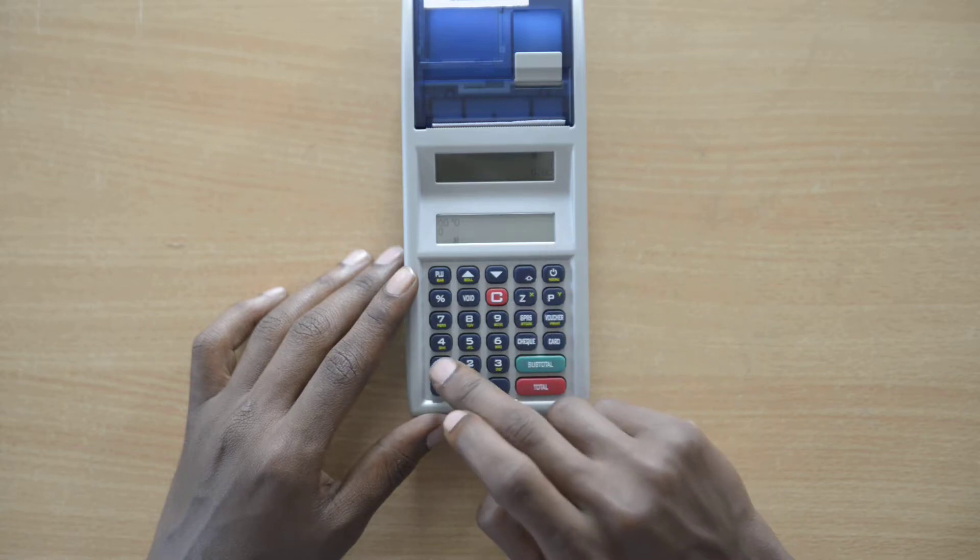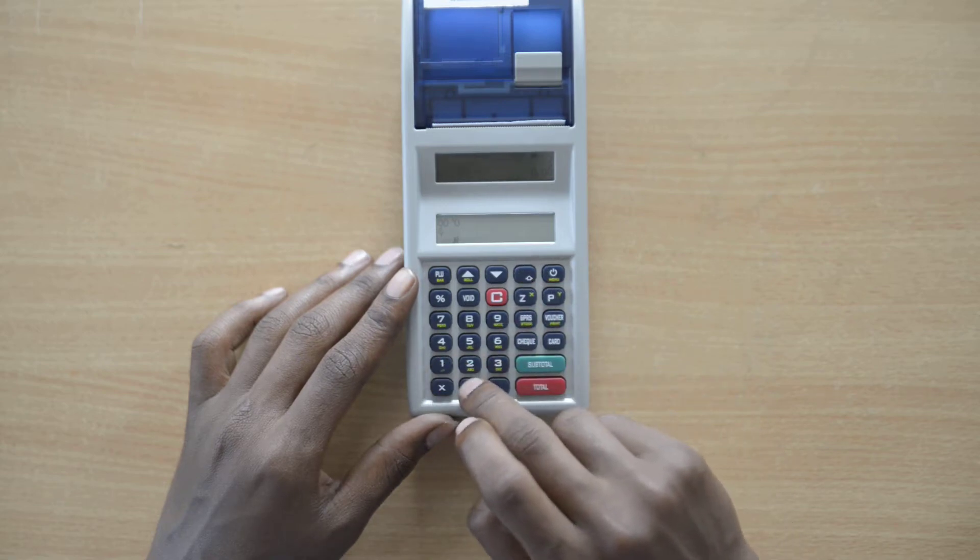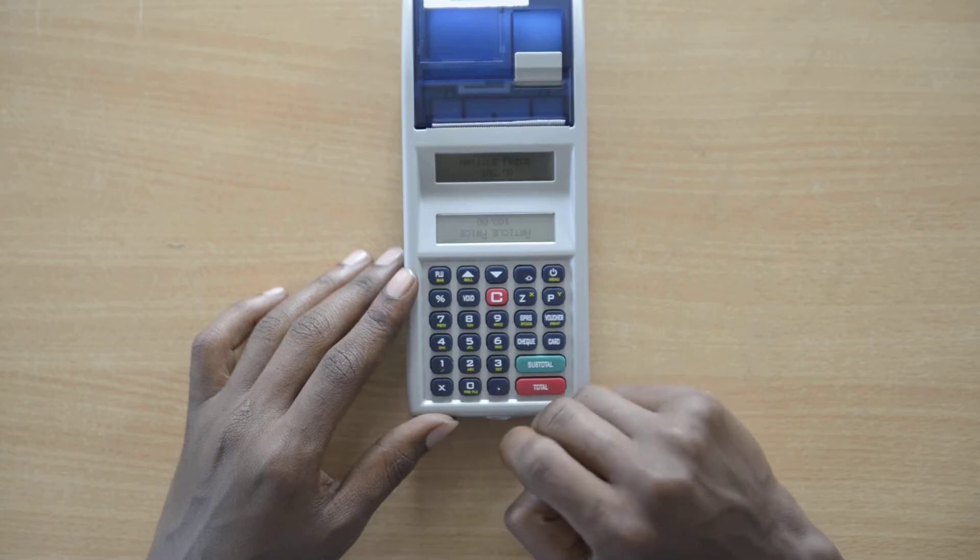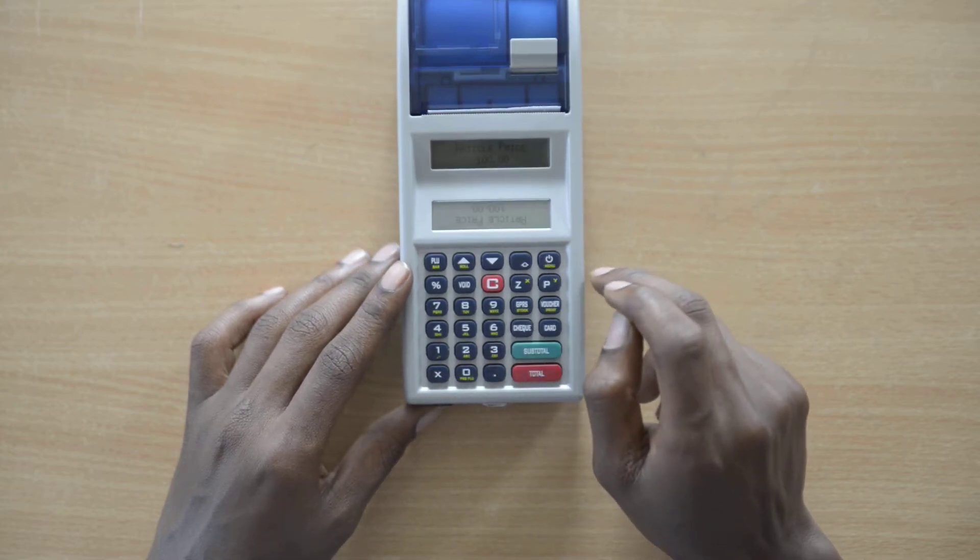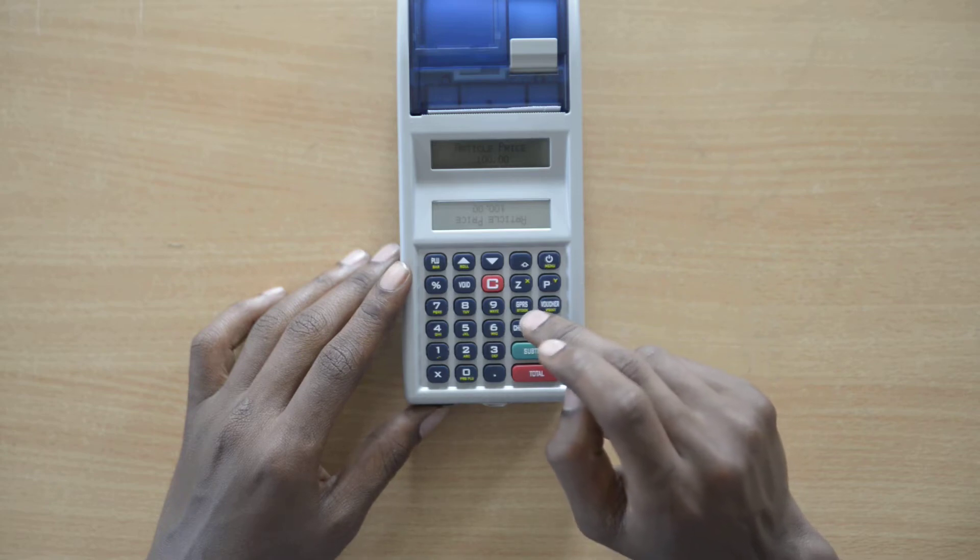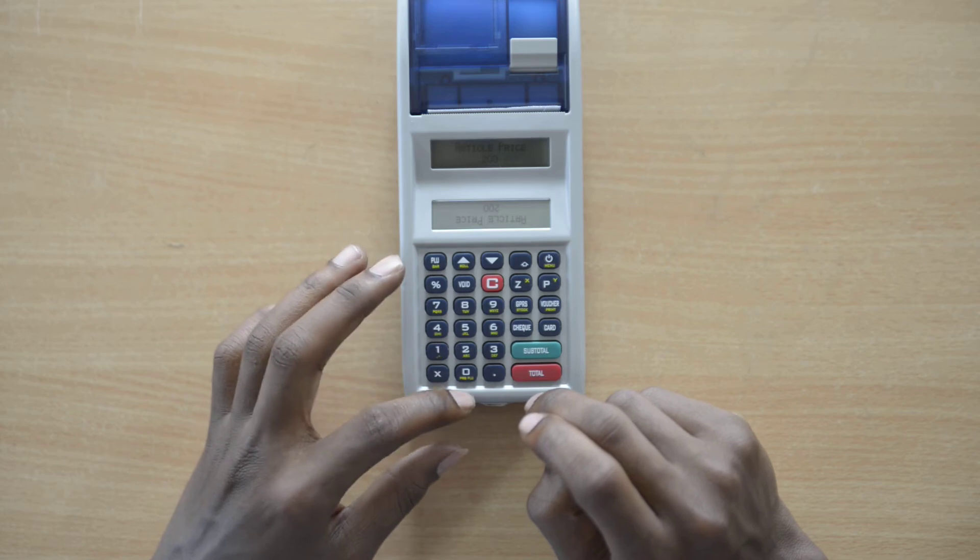After placing shift, you enter the code number, for example number 10. It will become 'at copies'. In 'at copies', you directly put the total amount, for example 200. After placing 200, you select PLU.